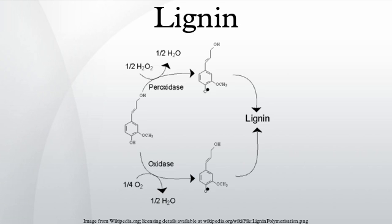These monolignols are incorporated into lignin in the form of the phenylpropanoids p-hydroxyphenol (H), guaiacyl (G), and syringyl (S), respectively. Gymnosperms have a lignin that consists almost entirely of G with small quantities of H. Dicotyledonous angiosperms more often than not have a mixture of G and S, and monocotyledonous lignin is a mixture of all three. Many grasses have mostly G, while some palms have mainly S. All lignins contain small amounts of incomplete or modified monolignols, and other monomers are prominent in non-woody plants. Thioglycolysis is an analytical technique for lignin quantitation, and lignin structure can also be studied by computational simulation.